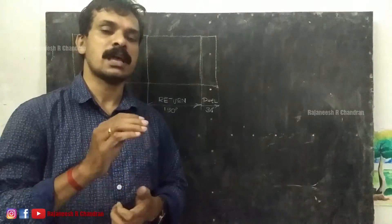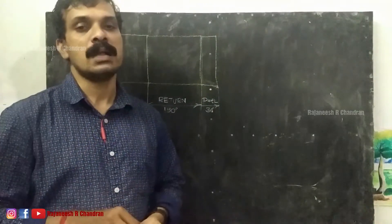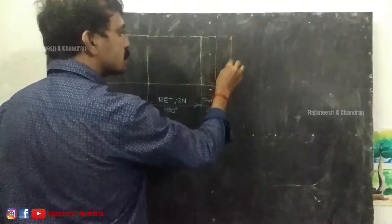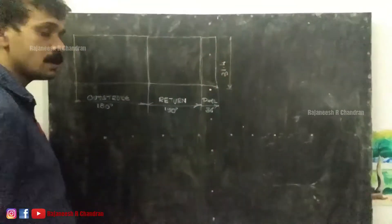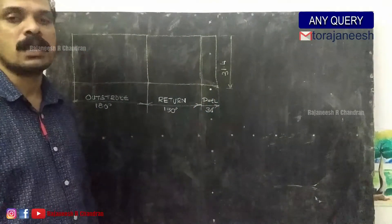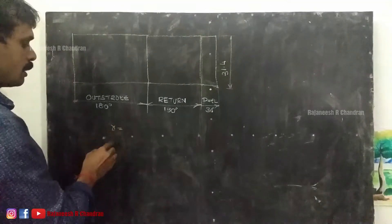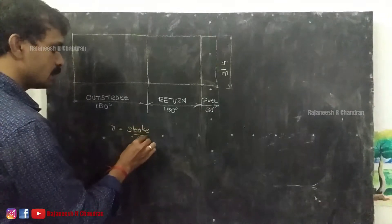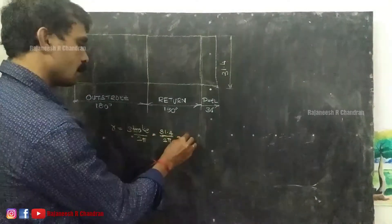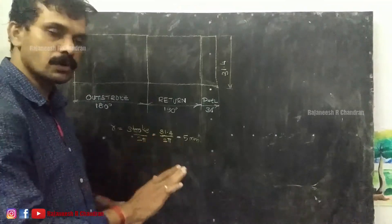For cycloidal motion, there is a generating circle. We need to calculate the radius of the generating circle using the given data. Stroke length is 31.4 mm, outstroke is 180 degrees, return stroke is 150 degrees, and dwell is 30 degrees. The radius of the generating circle is calculated by: r = stroke length divided by 2π = 31.4 / (2π) = 5 mm. So the radius of the generating circle is 5 mm.